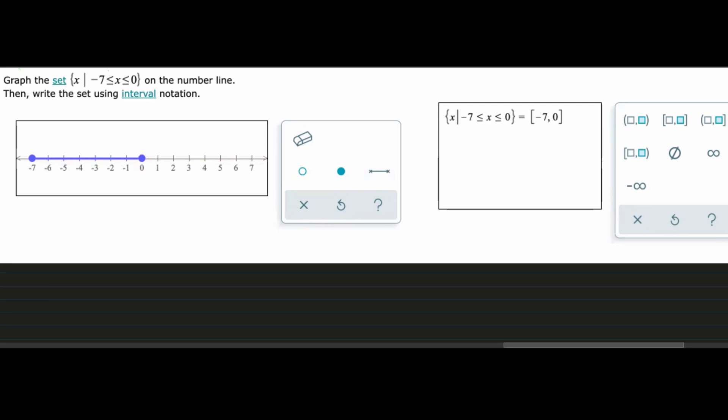We see that we have this negative 7 right here and it has to be less than or equal to our x. So that means x is going to be above and include negative 7, and then it has to be less than or equal to 0, meaning that it has to be less than and include 0.